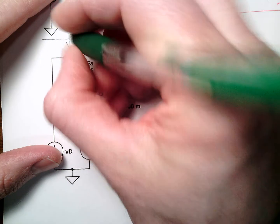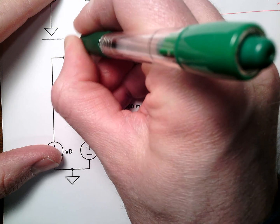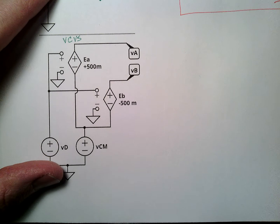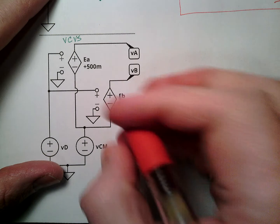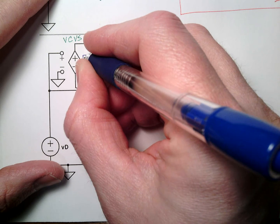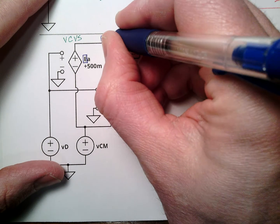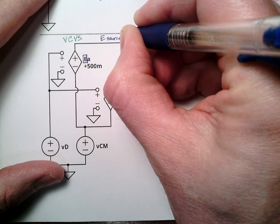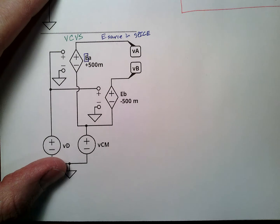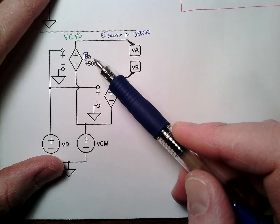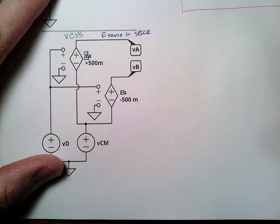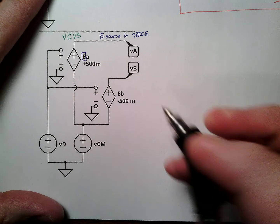So this is a voltage-controlled voltage source, a dependent source. This is an E source. I'll use the term E. Most SPICE simulators, maybe all SPICE simulators, use a voltage-controlled voltage source is an E source. The first character sets what type of this is. Let's work this out.